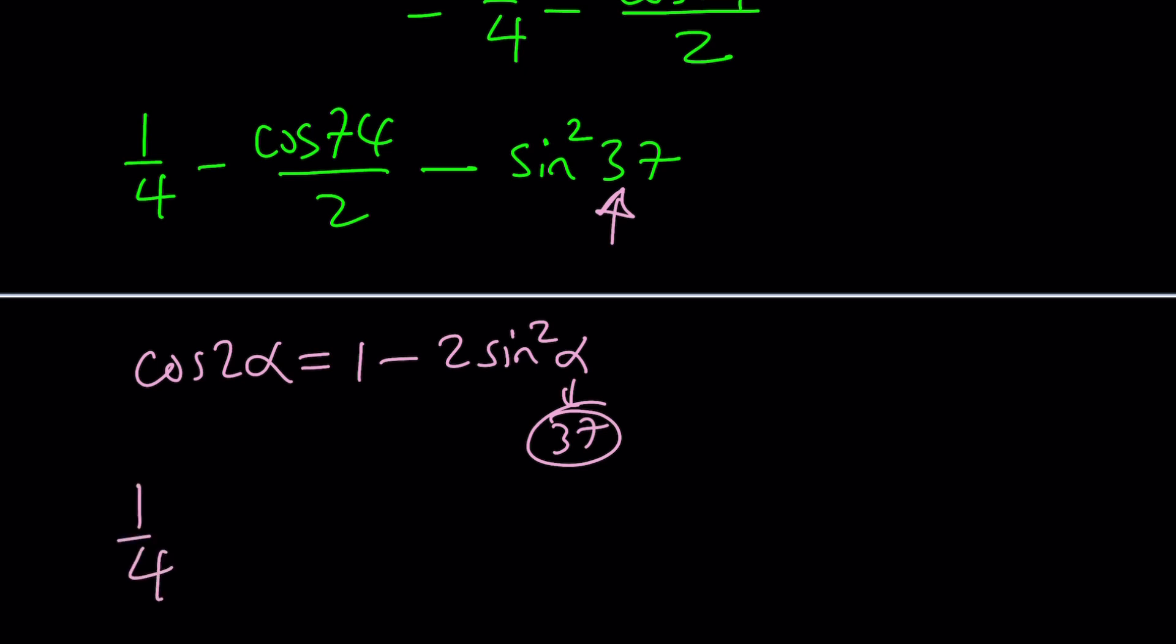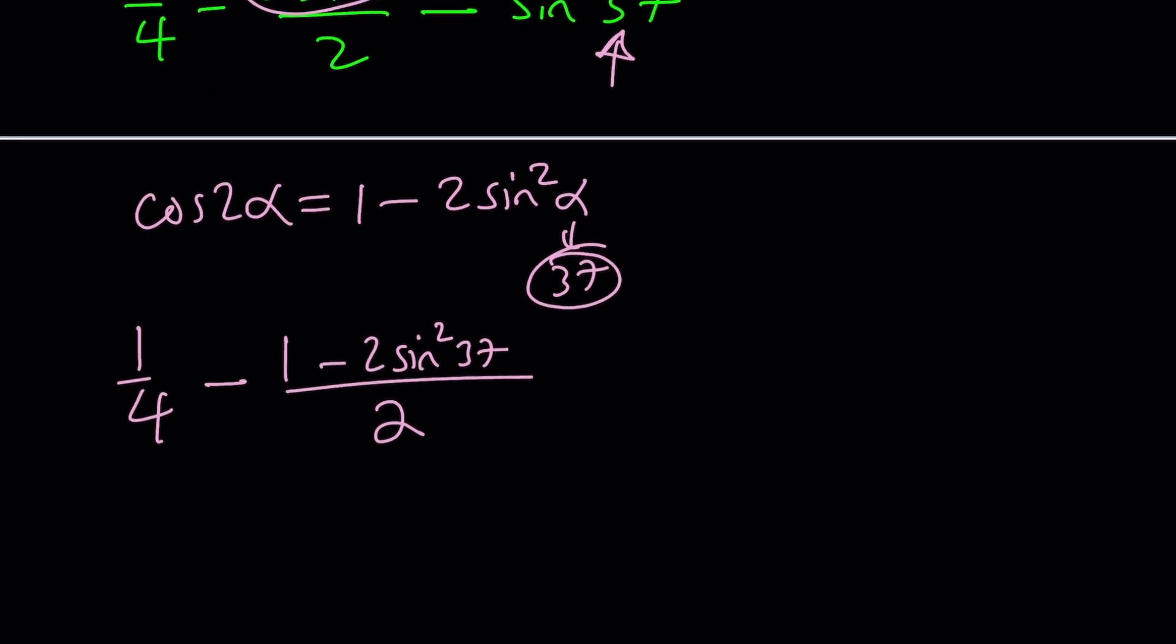So we have the following. One fourth minus, and I'm going to use the double angle for this because 74 is 2 times 37. So I can replace cosine 74 with 1 minus 2 sine squared 37, which is half of that. Some people call this half angle. It's the same idea. Minus sine squared of 37.